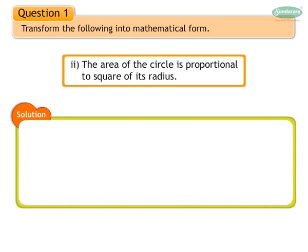Problem 2: The area of the circle is proportional to the square of its radius. In this problem, area is directly proportional to radius squared. Hence, write it symbolically and then express it as a is equal to k r square, where k is constant.